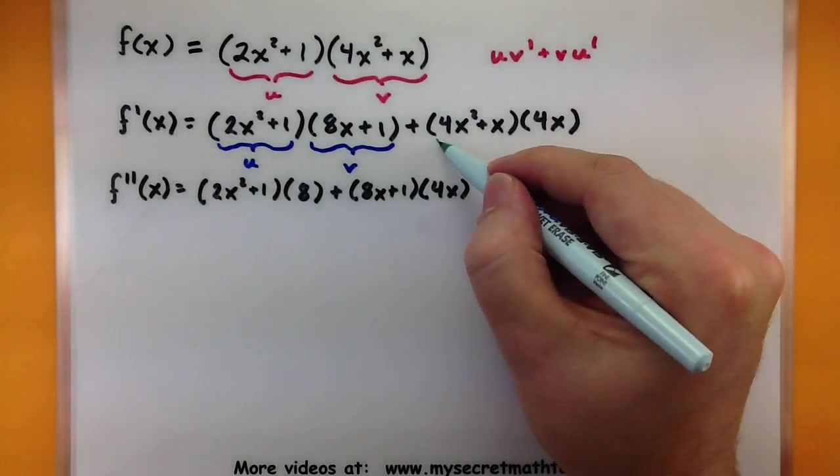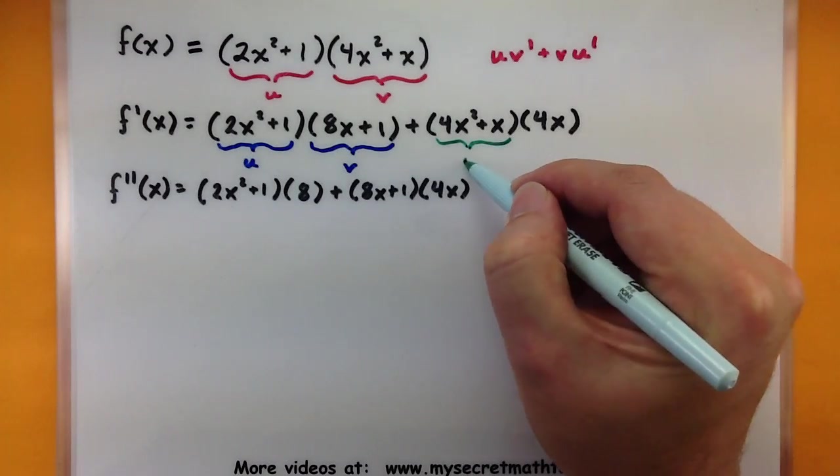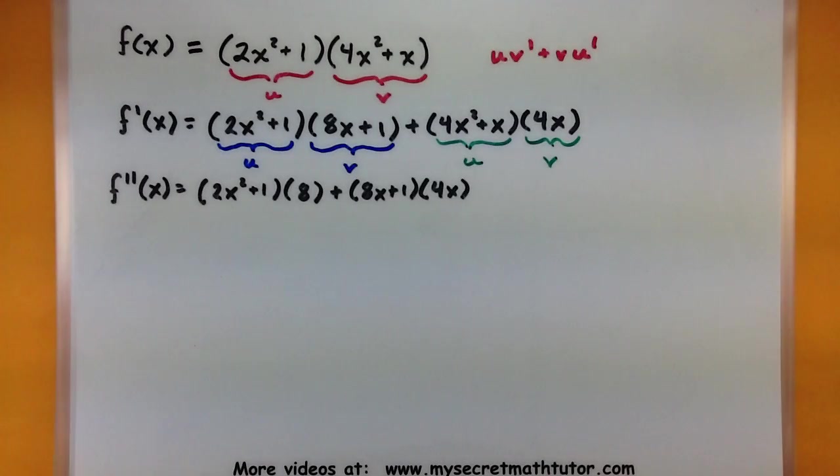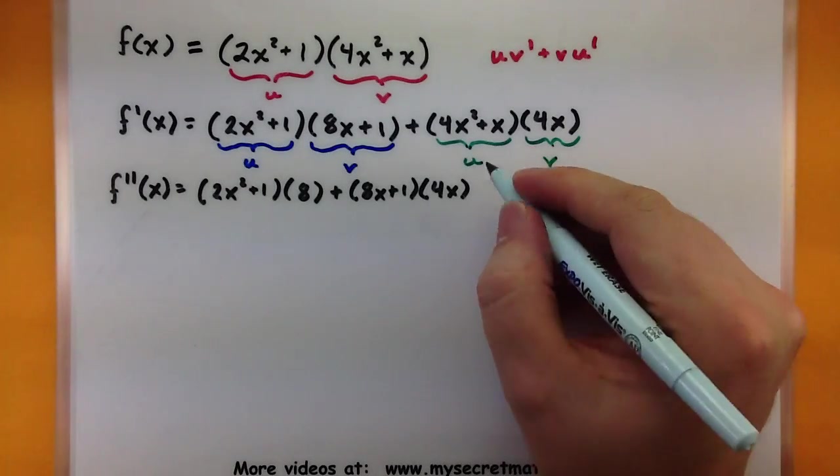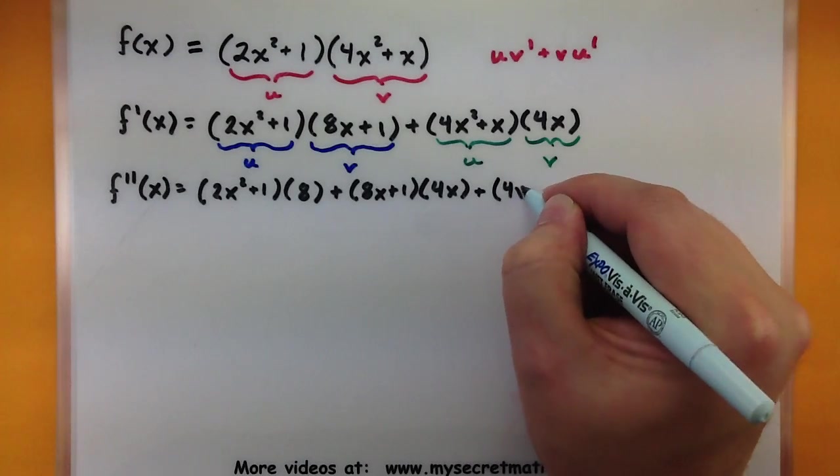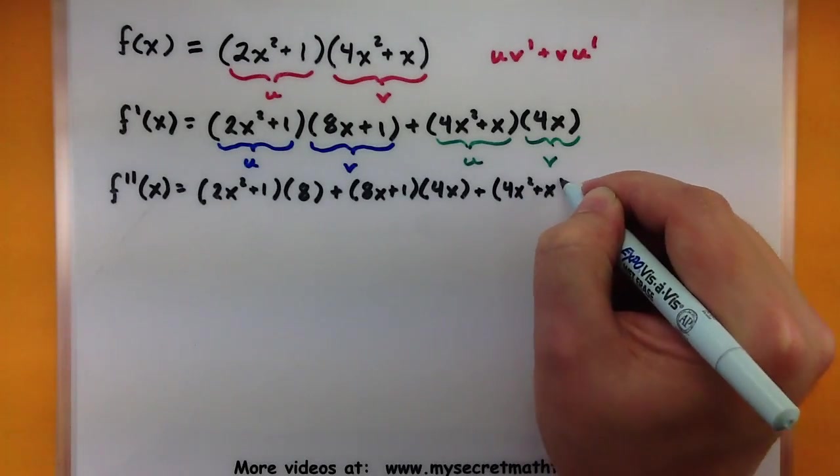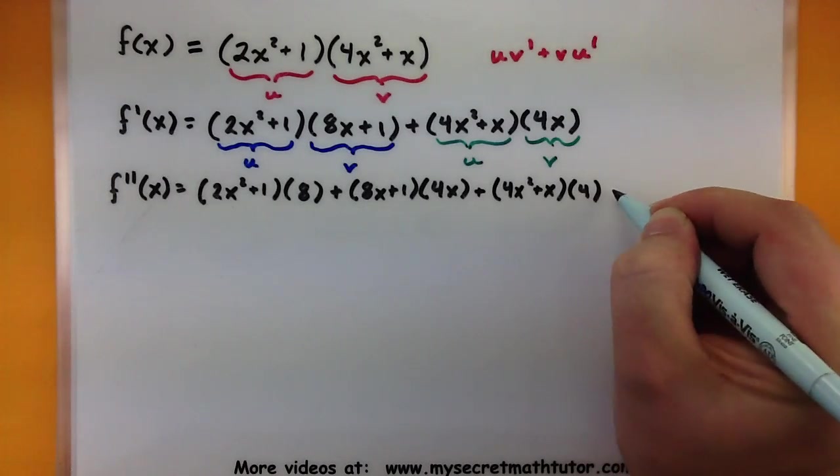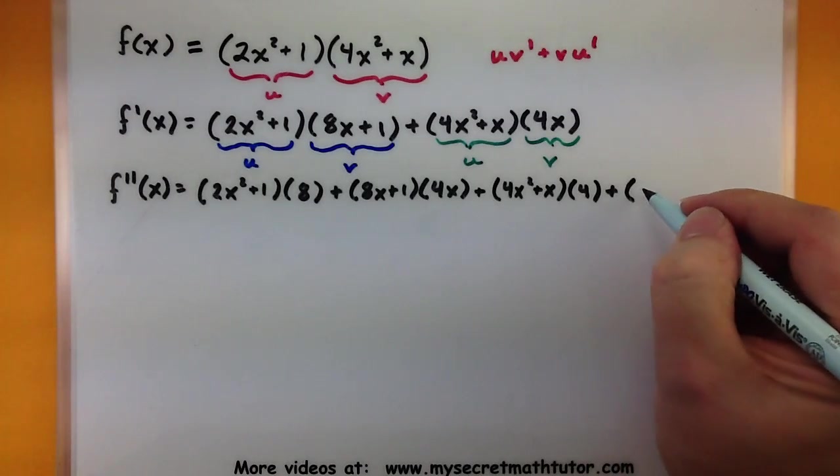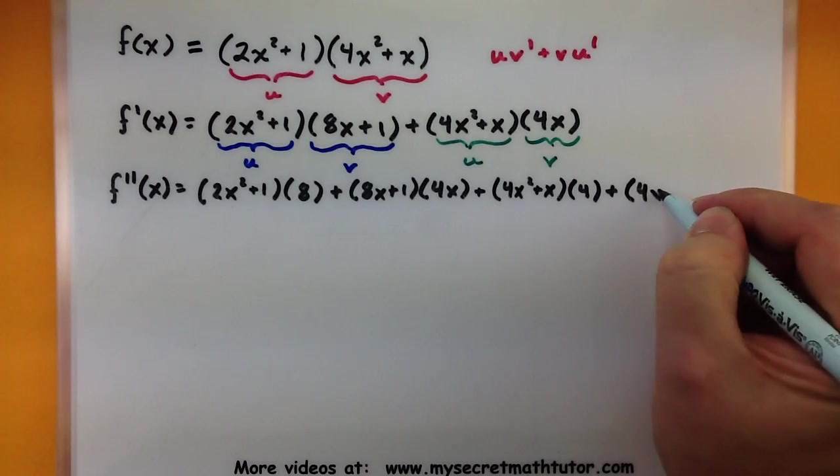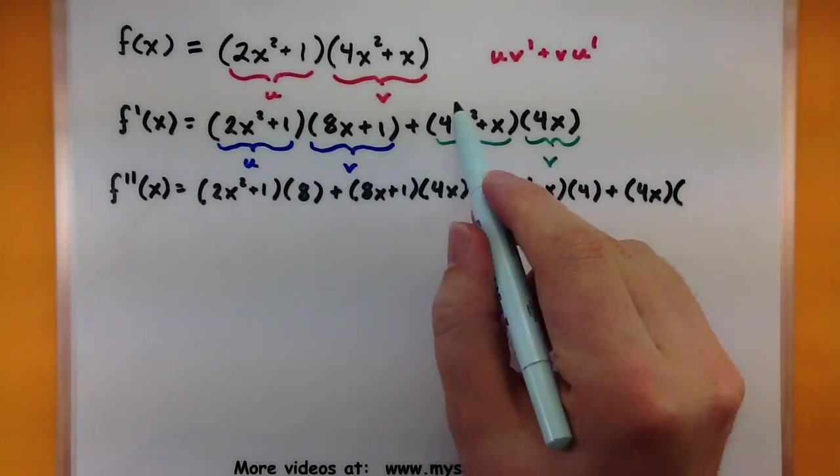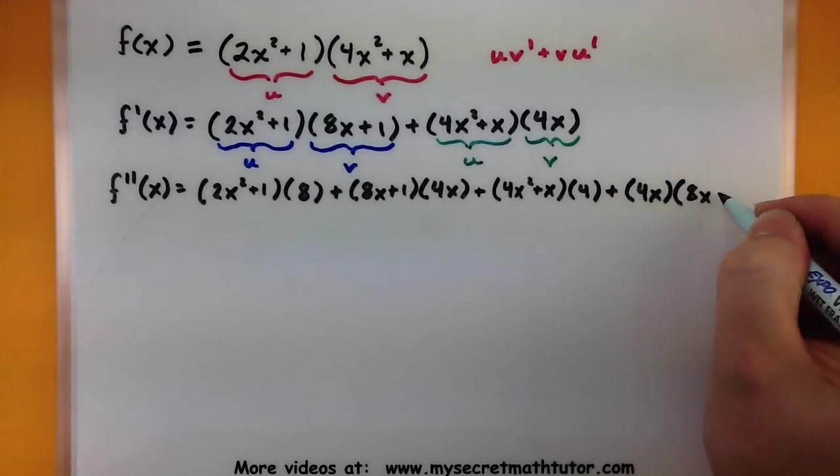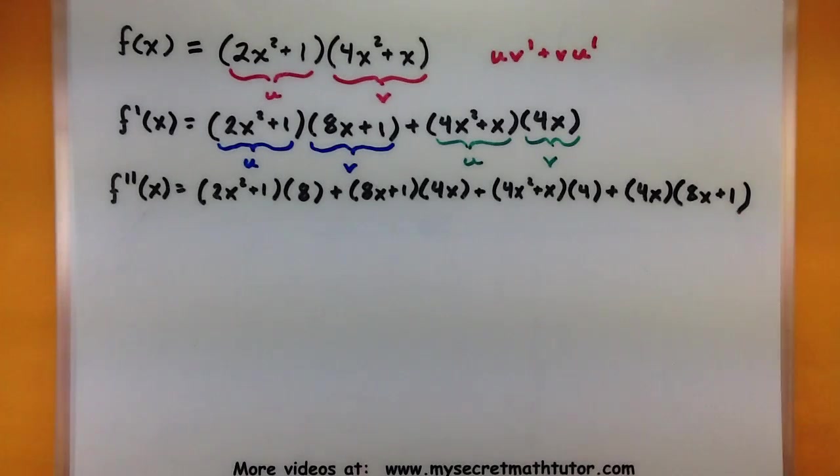Now let's also find the derivative of these next two pieces. Again by recognizing the two functions that are really being multiplied together. So our first function just as it is. 4x squared plus x. Derivative of the second. 4. Plus the second function. 4x. Multiplied by the derivative of this one. I get 8x plus 1.